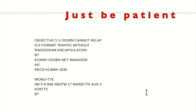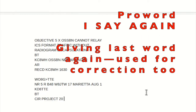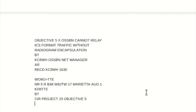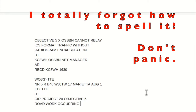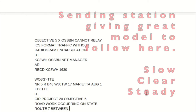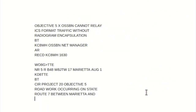Okay. Letter group Charlie India Romeo. Project 2-0, figures 2-0. Objective figure 5. Road work occurring on state route figure 7 between Marietta and, two words, Moore's Junction. And no more.